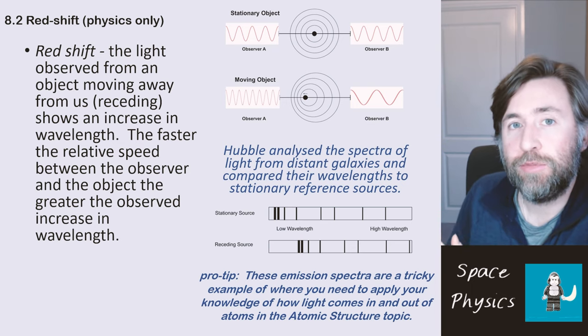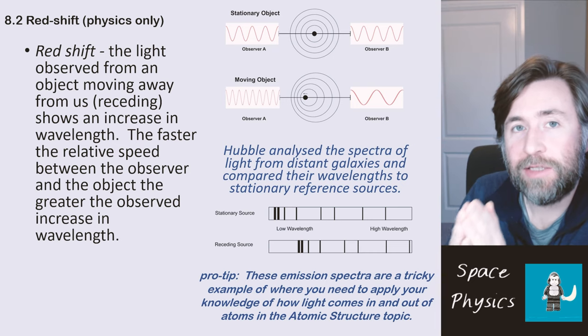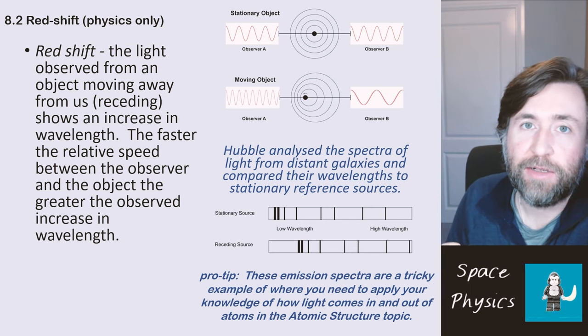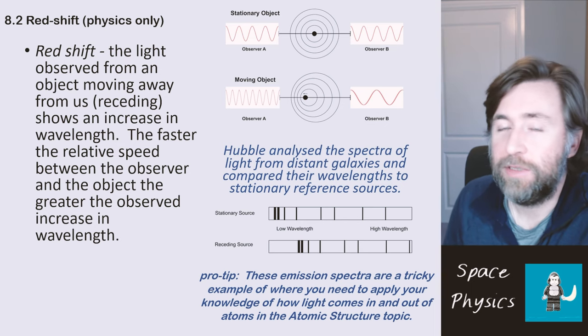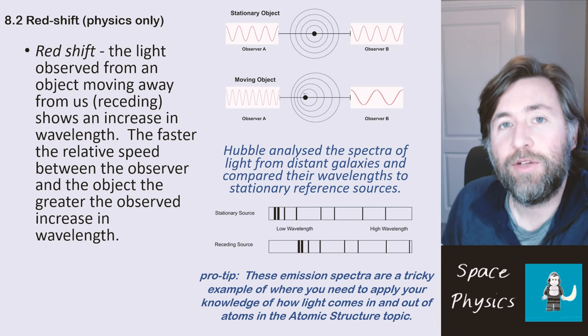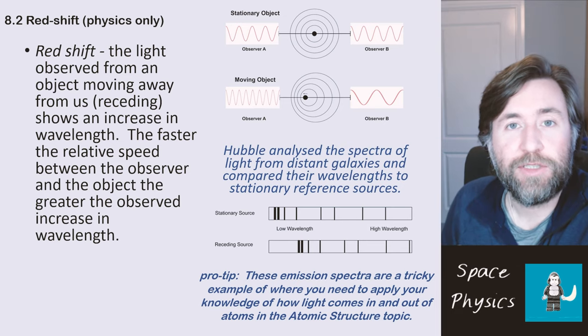But what Hubble saw was he had the same pattern of emission lines. But the source that was moving away from the galaxies that he was looking at in space showed the same pattern shifted towards the higher wavelength end. And when he looked at galaxies, he noticed that almost all of them were moving away from us. Almost all of the light from those distant galaxies was red shifted.